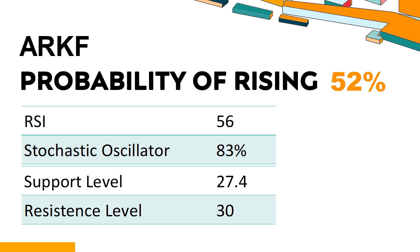Has ARKF experienced bullish or bearish technical momentum recently? Technical Signals and Analysis: ARKF's 14-day Relative Strength Index (RSI) value was 56. When the RSI is between 50 and 70, it generally indicates that the stock is moderately bullish. This means that the security's price has been rising but has not yet reached overbought levels, which are usually considered an RSI reading of 75 or higher.